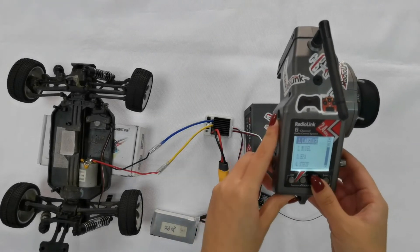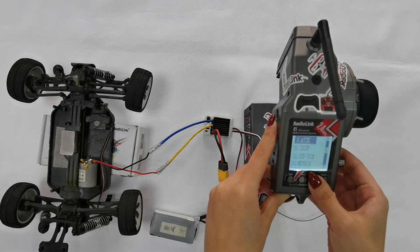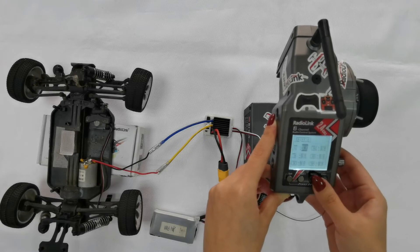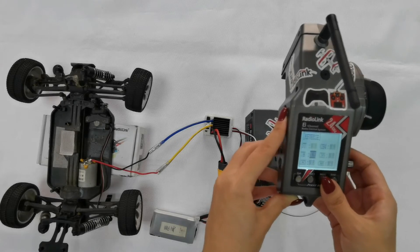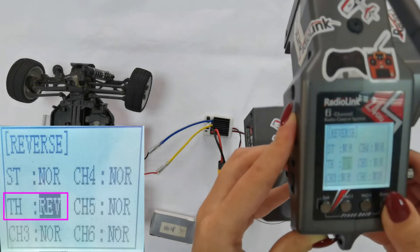In the basic menu under reverse settings, change the throttle from normal to reverse.